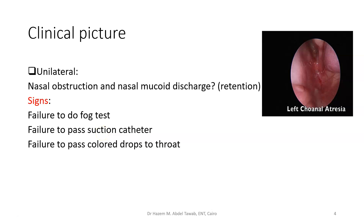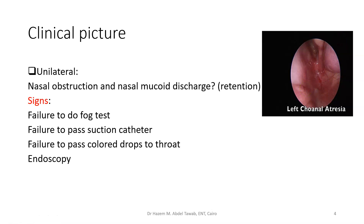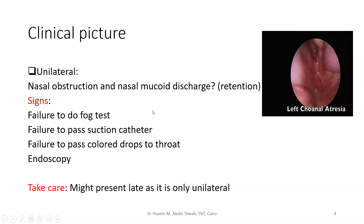For the colored drops test, we instill colored drops bilaterally in the nose, then open the child's mouth and see where the drops appear. If they come from the right side but not the left side in the nasopharynx, it means that side is closed. Endoscopy has a golden role — you can introduce the 2.7 mm rigid scope or pass the fiber optic scope for diagnosis. Take care that unilateral cases may present late, as the child breathes normally through the other nostril. We have seen patients with unilateral choanal atresia diagnosed at age 14, 15, or 20.